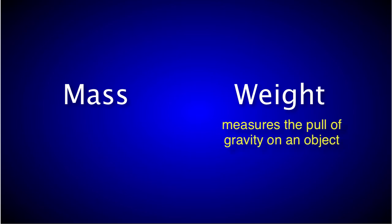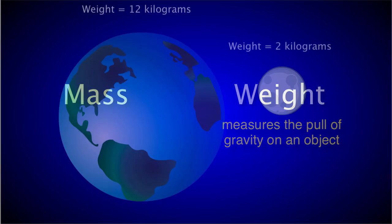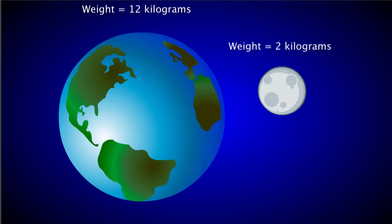Weight is a measure of the pull of gravity on an object. So an object's weight would be different if it were weighed on Earth versus the moon because of the difference in gravitational pull. However, an object's mass would remain the same in both places because mass measures the amount of substance in an object.